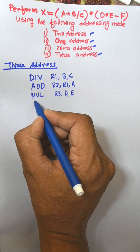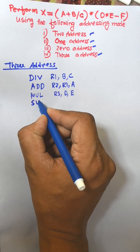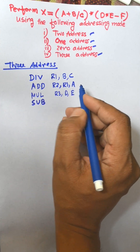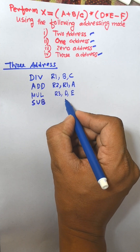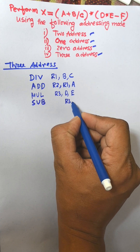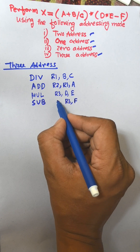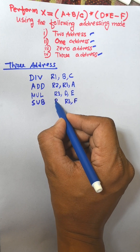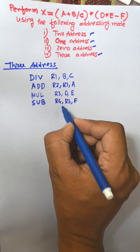Now subtract: R3 and F are subtracted and the result is transferred to R4.